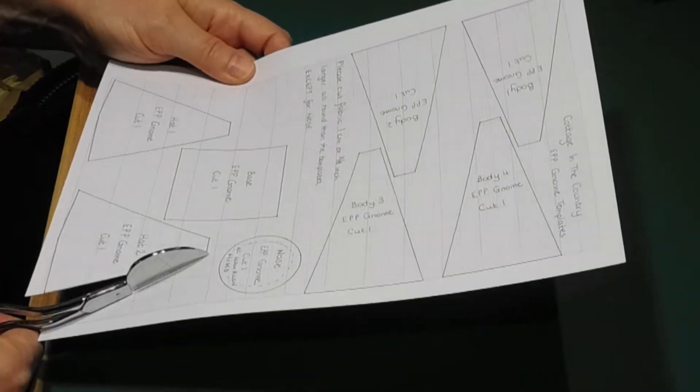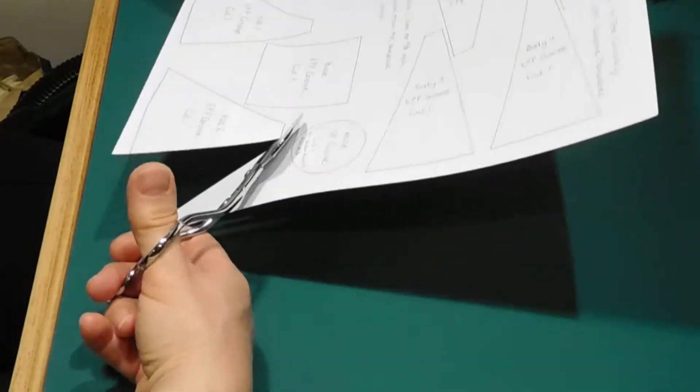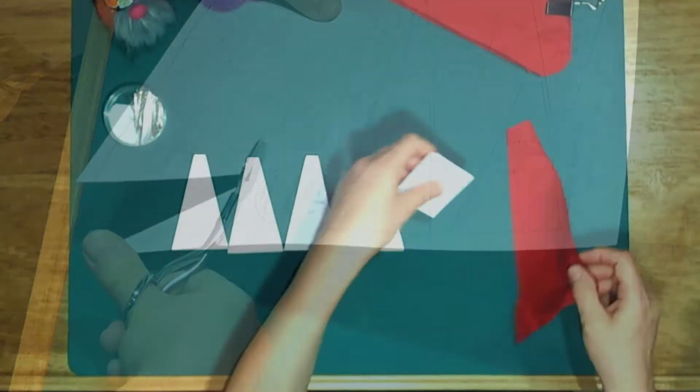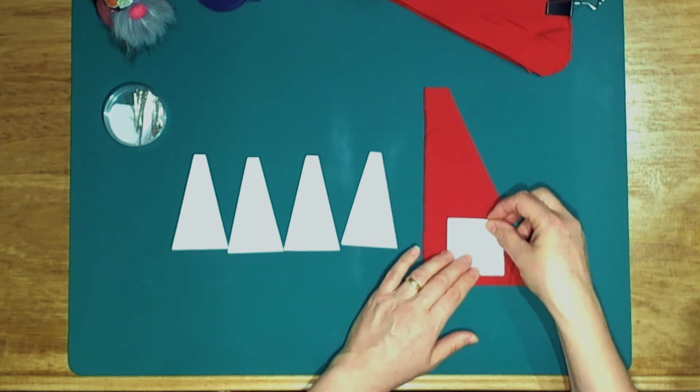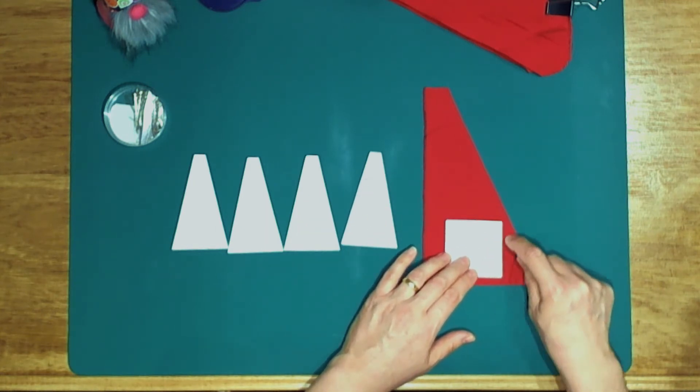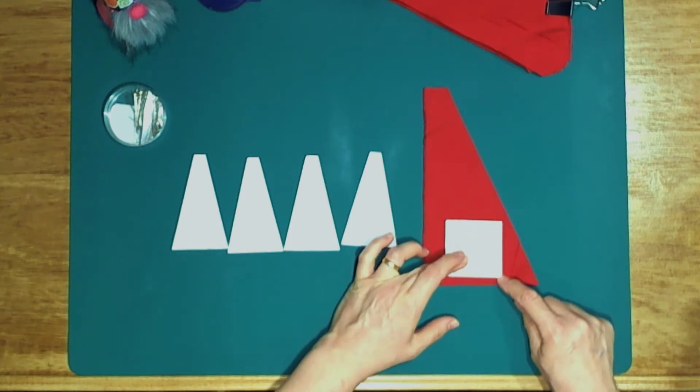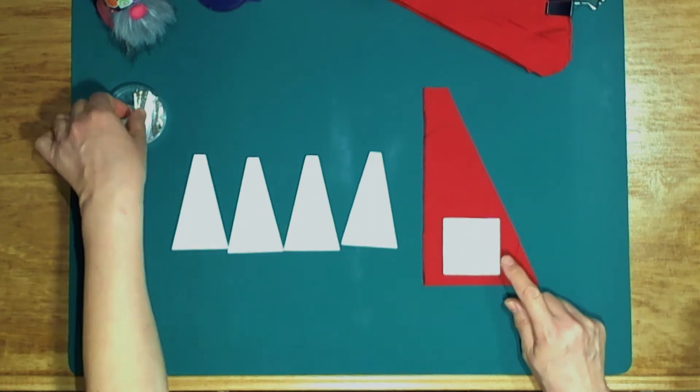Cut the pattern pieces from the card. I'm using offcuts of cotton material from eBay for my gnome. Place each template onto a single piece of cotton fabric and cut around them, adding an extra one centimeter or three eighths of an inch fabric all the way around the template.